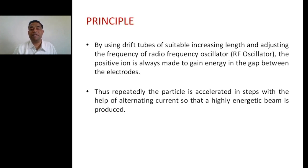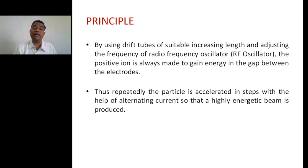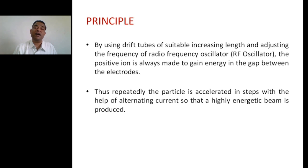The principle of the linear accelerator is very simple. By using drift tubes of suitably increasing length and by adjusting the frequency of the radio frequency (RF) oscillator, the positive ion is made to gain energy in the gap between the electrodes. This process is repeated many times, and by application of an AC signal of proper frequency, a highly energetic beam of positive ions can be obtained.